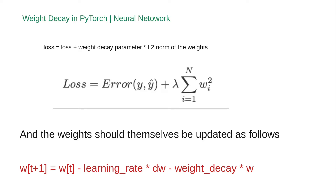Weight decay is a regularization technique that adds a small penalty — usually the L2 norm of the weights — to the loss function. The formula is: Loss_new = Loss + weight_decay_parameter × L2_norm(weights). This can also be written as Loss = error (original loss) + λ × Σw², where λ is a constant hyperparameter multiplied by all the weights squared.